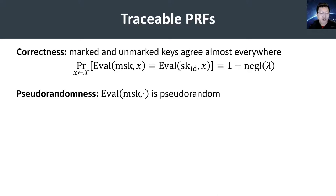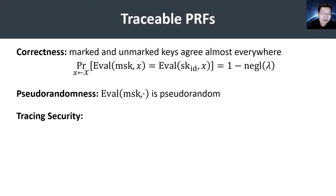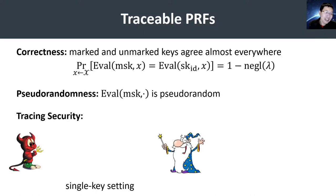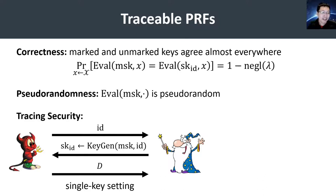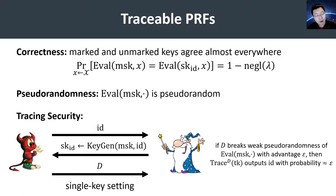And finally, we have the tracing security definition, which says any adversary that produces a useful distinguisher that can break pseudorandomness given uniform random input-outputs must necessarily preserve the watermark. More formally, we model this as a game between an adversary and a challenger. The adversary specifies a mark or identity, gets the secret key for that identity, and then constructs a distinguisher. In the single-key setting, the adversary may only submit a single key. The requirement is that as long as this distinguisher is useful — namely, it breaks weak pseudorandomness with non-negligible advantage epsilon — the tracing algorithm will successfully recover this identity with probability close to epsilon.